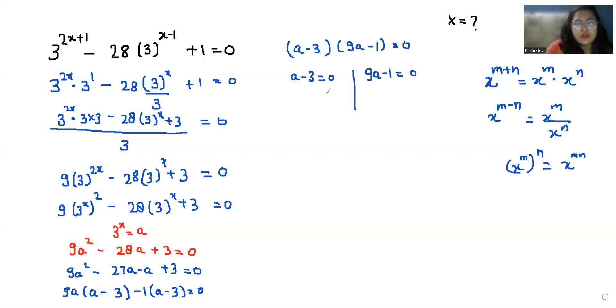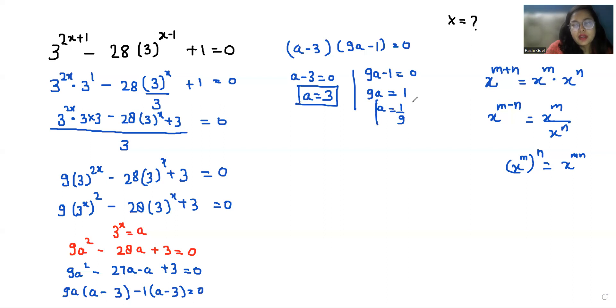Either (a minus 3) equals 0 or (9a minus 1) equals 0. In the first case, the value of a is 3. In the second case, 9a equals 1, so a equals 1/9.